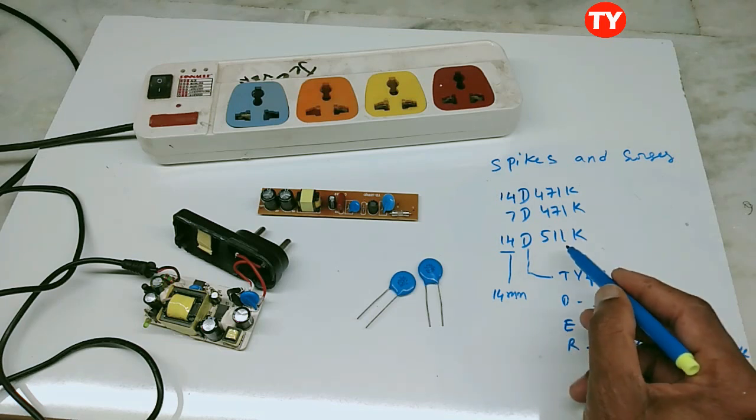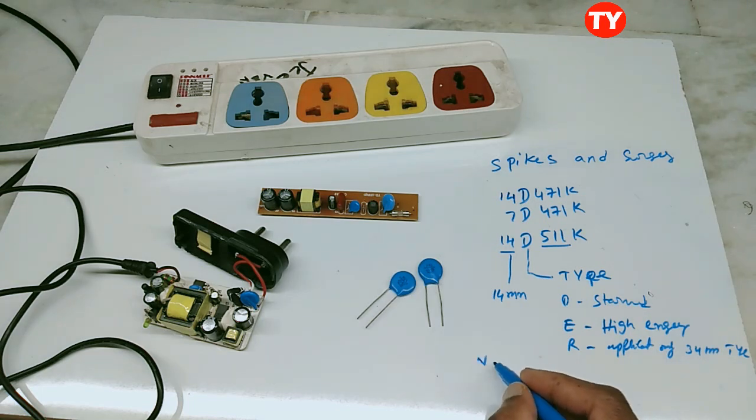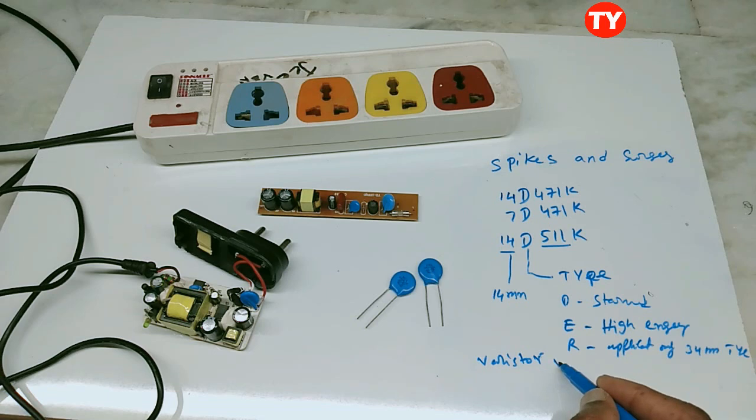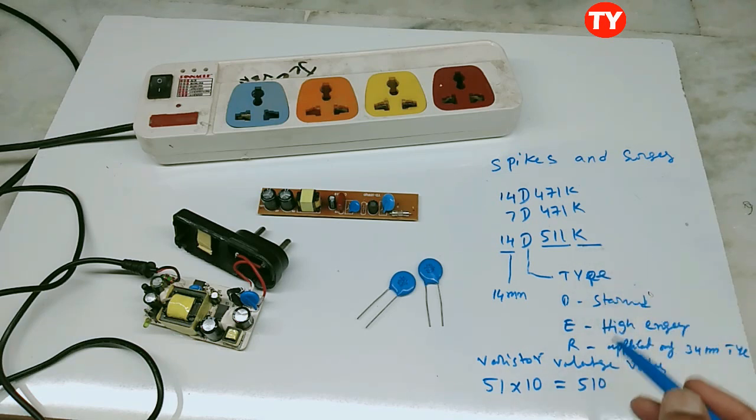This is varistor voltage value. How to calculate: 47 into 10 equals 470. This one is tolerance. K means tolerance 10%, J means 5%, K means 10%, M means 20%.